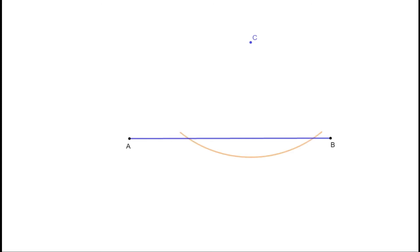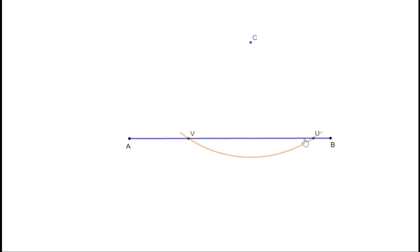Put the compass at C — now a point outside the line — and draw an arc so that it intersects the line at two different points. Mark the points of intersection as U and V. Since CV and CU are radii of the same arc, triangle CVU is isosceles. Therefore, the perpendicular bisector of UV passes through point C, and the perpendicular bisector of UV is perpendicular to AB. We need one more point to draw the perpendicular bisector of UV.